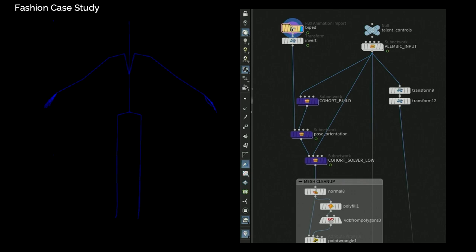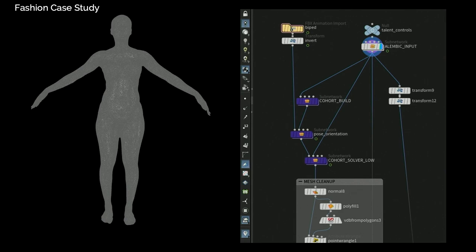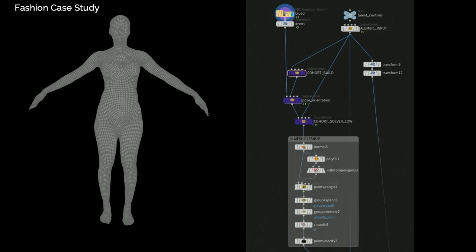We start with our volumetric mesh, which is essentially heavy photogrammetry. Then we create a keyframe hero mesh with Quad Remesher and automate the body topology. A lot of what we do has automation built in. The Cohort build tool takes in the necessary information and applies velocity data from the skeletal mesh at the pose orientation, allowing us to solve a lower-res solution with smaller topology for better results before moving to a secondary pass.